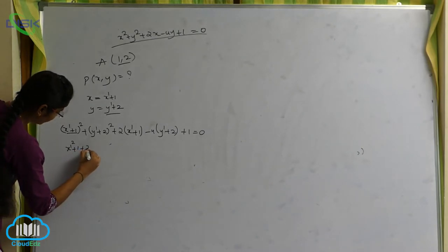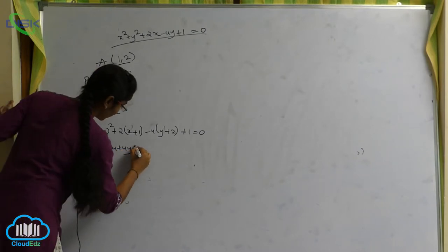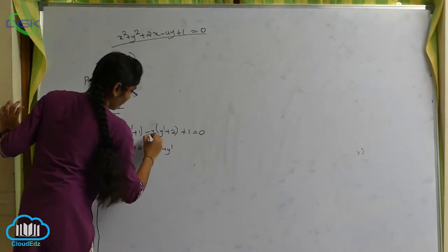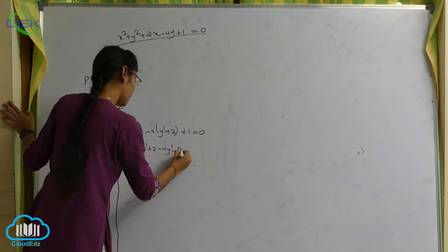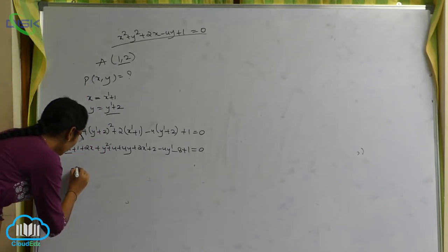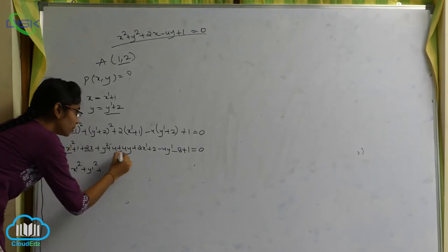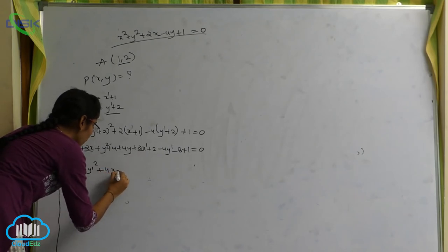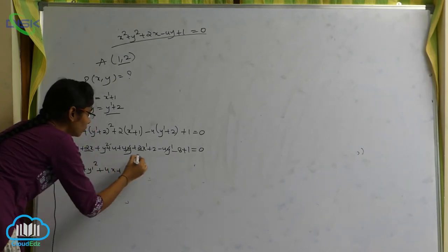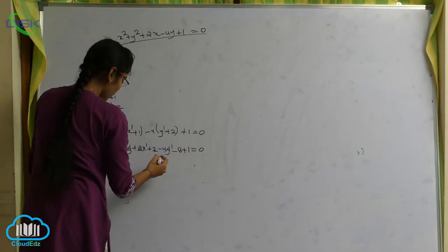Expanding: x dash squared plus 2x dash plus 1 plus y dash squared plus 4y dash plus 4 plus 2x dash plus 2 minus 4y dash minus 8 plus 1 equals 0. The x and y terms cancel: 1 plus 2 gives 3, 4 plus 2 gives 6, 6 plus 1 gives 7, 7 plus 1 gives 8, 8 minus 8 gives 0.